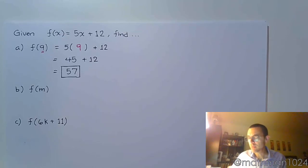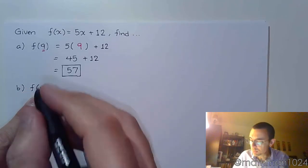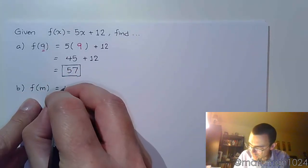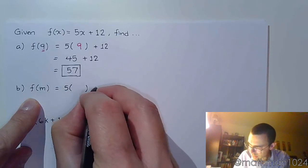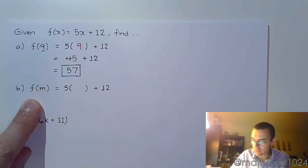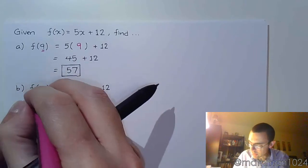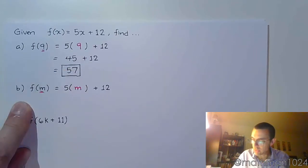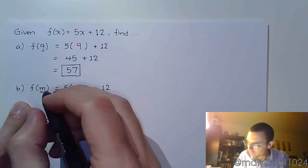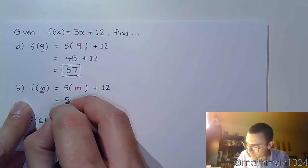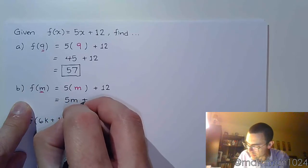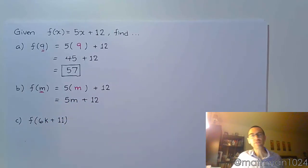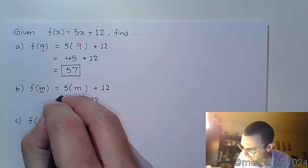Even here in part b, part b is not plugging in a number like 9, it's plugging in a variable. So we replace the x with this input, and the input here is m. So you're just replacing the x with m and you work this out. Well, this is just 5 times m, so that's 5m plus 12. And then you try to simplify this as best you can. But there's nothing else to do. 5m and 12 are not like terms, so it stays just like this.